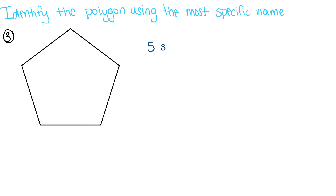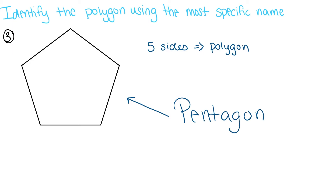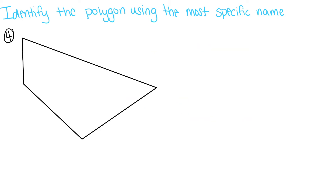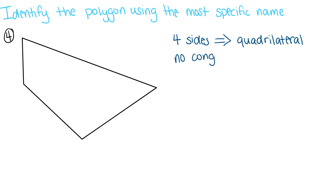Next, we have a polygon that has five sides. When we count the sides, there are five sides, so that means this must be a pentagon. Next, we have a polygon that has four sides, which means it is a quadrilateral. Since none of the sides are congruent, none of the angles are congruent, and we can't identify any sides that are parallel, this simply is a quadrilateral.